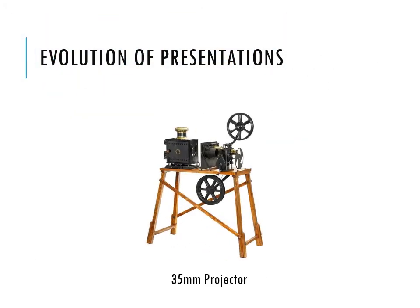Now let's take a look at the evolution of presentations — they have come a long way through history. Different mediums have been used to enhance presentations. One such medium was the 35 millimeter projector, which you may have seen in classic movies where a bright light is projected from the back of a theater. This equipment allowed film to be passed in front of light, displaying images on a projected surface.